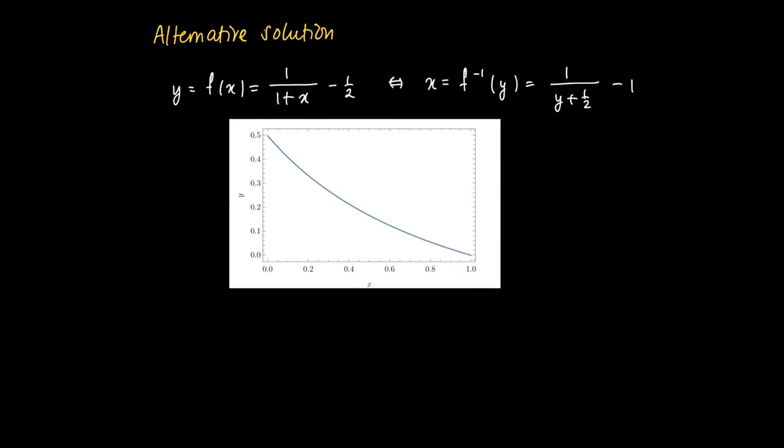So here's the picture. Here we have f, the function f. If we take an arbitrary x, then we know the y value that is connected to x. So for a given y, we know x. It's 1 over (y plus 1/2) minus 1.